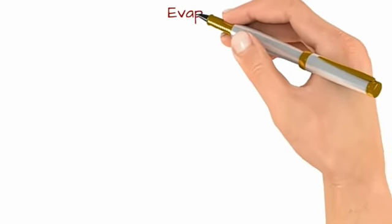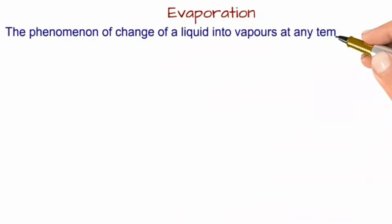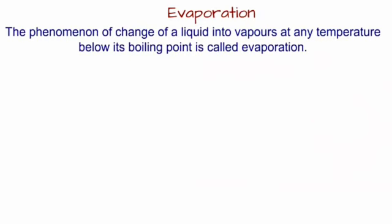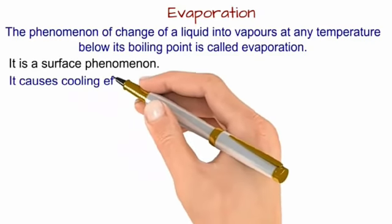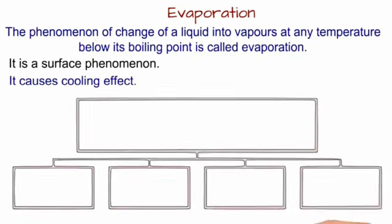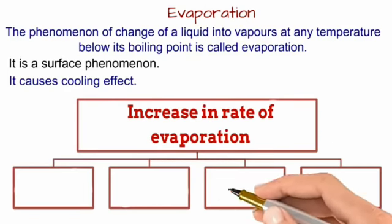Now we will study evaporation. The phenomenon of change of liquid into vapors at any temperature below its boiling point is called evaporation. It is a surface phenomenon, meaning it occurs at the upper layer of the liquid, not in the whole layer. It also causes a cooling effect.